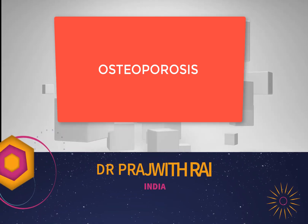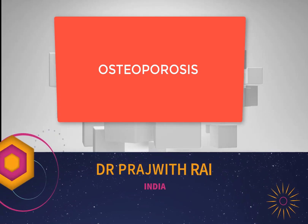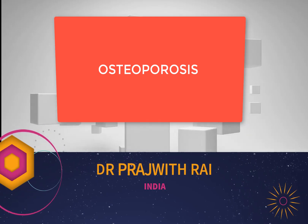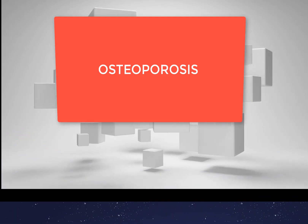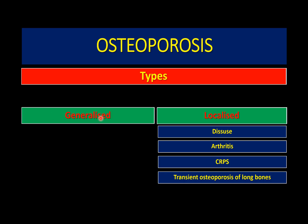Osteoporosis is the most common metabolic bone disease, occurring because of inadequate bone formation or increased bone resorption. It can be generalized, affecting all bones including the axial and peripheral skeleton, or it can be predominantly localized. Localized involvement happens when there is decreased activity in a limb, or in rheumatoid arthritis where there is periarticular osteopenia.